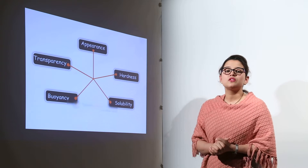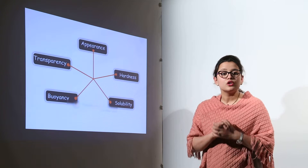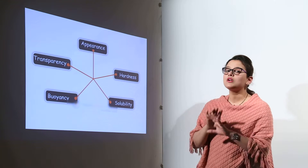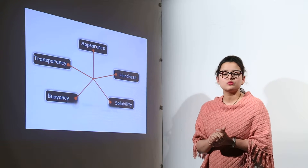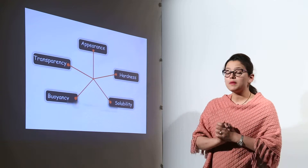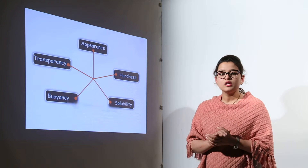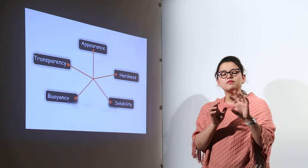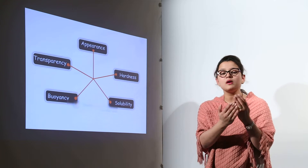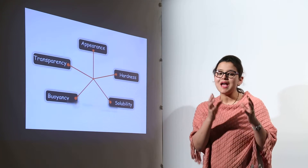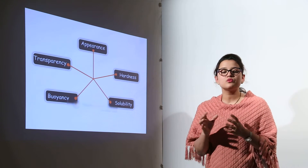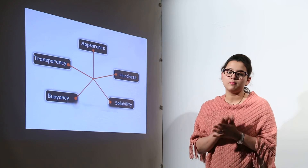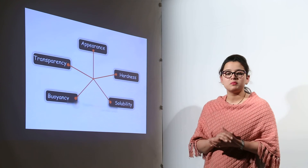The third type is translucent. Translucent objects are those through which you can partially see — to some extent but not completely. An example is butter paper, or a paper with oil applied to it. You can see through it to some extent, getting a blurred image of the object behind, but not as clearly as with a transparent object. So translucent objects allow partial but not complete visibility. These were the five properties of materials we have studied.